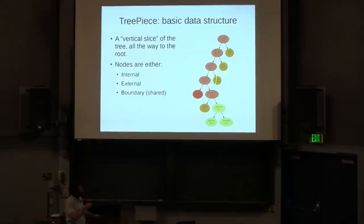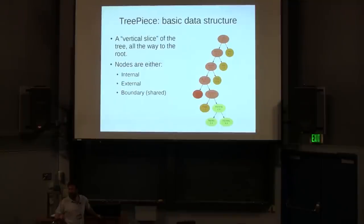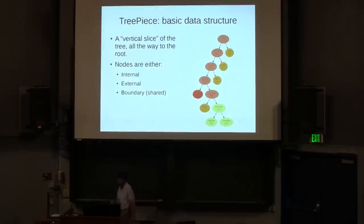You might think this seems like an awful lot of extra memory, but I'm exaggerating here — the tree goes significantly deeper. The number of shared layers is essentially log of the number of processors, so this overhead doesn't grow very fast as we go to large processor counts.